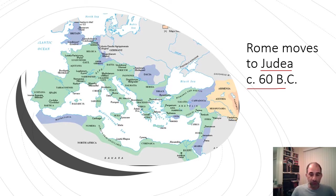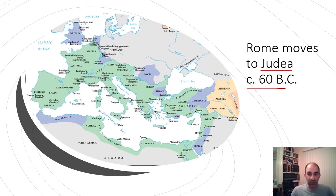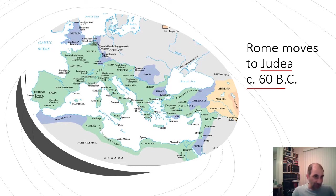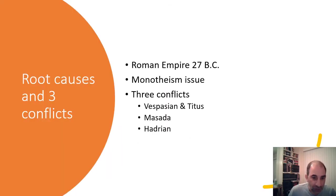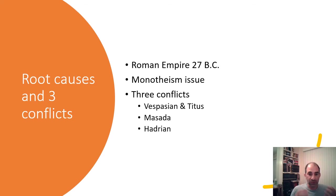Shortly after 60 BC, the Roman Republic falls and the Roman world becomes an empire. When the Roman world becomes an empire, that's where the issues really begin to develop that are going to impact the Romans in Judea, especially the Jewish and even the Christian populations in that area that will eventually emerge. There are root causes and three conflicts all associated with the Roman empire moving into the region.